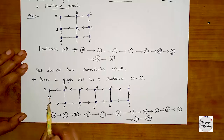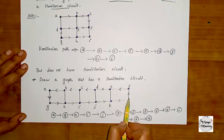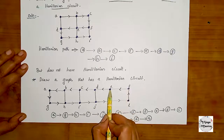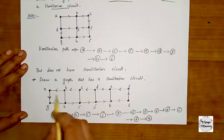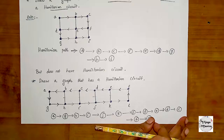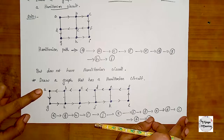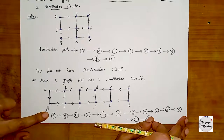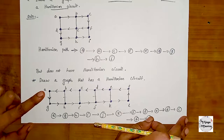The circuit is: A, G, H, I, J, K, L, F, E, D, C, B, then back to A. All vertices are included. This is the starting point and ending point — this is a Hamiltonian circuit.